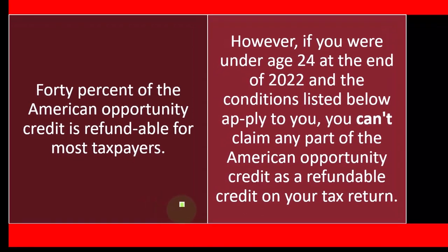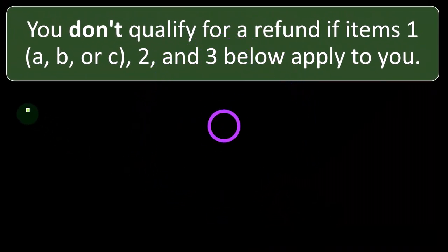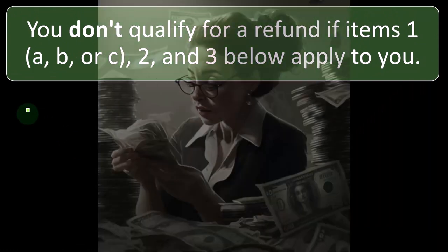However, if you were under age 24 at the end of 2022 and the conditions listed below apply to you, you can't claim any part of the American Opportunity Credit as a refundable credit. Instead, your allowed credit figured on Form 8863, Part 2 will be used to reduce your tax as a non-refundable credit only. You don't qualify for a refund if items 1(A, B, or C), 2, and 3 below all apply to you.